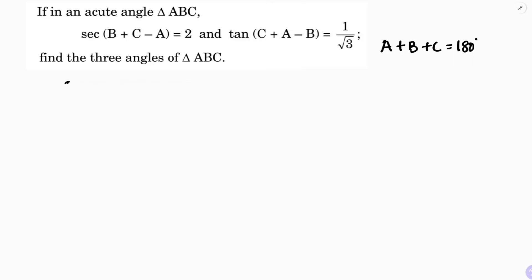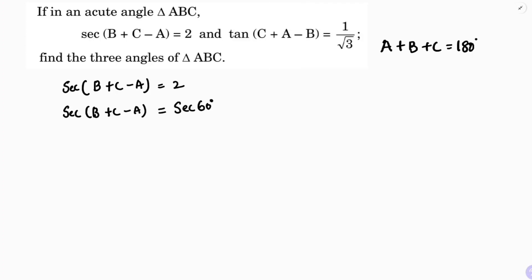They gave sec(B+C-A) equals 2. Whenever they give B+C or A+B, the value will be a standard one. Here sec(B+C-A) equals 2, and you get 2 as a standard value for sec 60 degrees. So on comparing, B+C-A equals 60 degrees. This is equation 1.